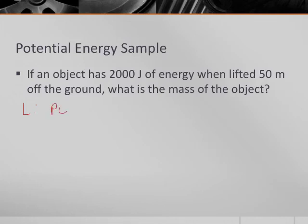We know our potential energy is 2,000 joules, and we know our height is 50 meters. And what else do we know even though it's not written? G equals 10 meters per second squared.